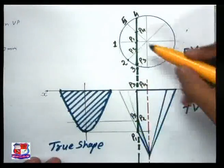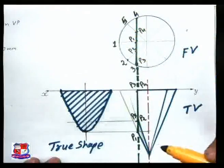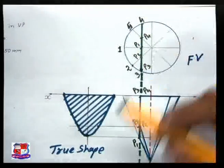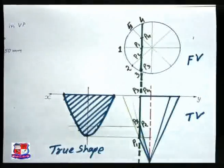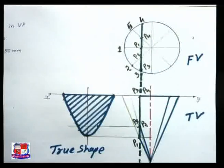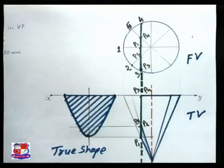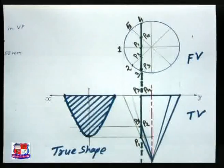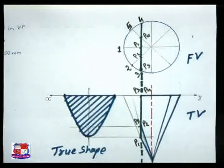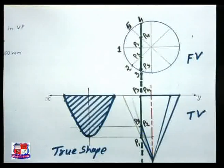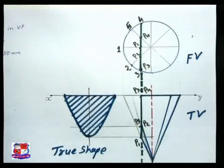This portion is removed. In the top view, we can also draw the true shape by drawing projections from points 1, 2, 3, 4 and measuring distances in the front view — that would also give a similarly shaped hyperbola. Today we have discussed various problems based on projections and sections of solids.